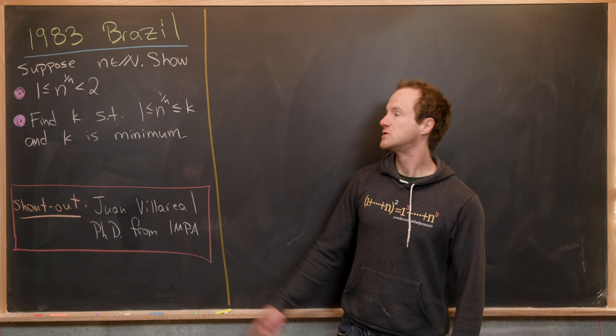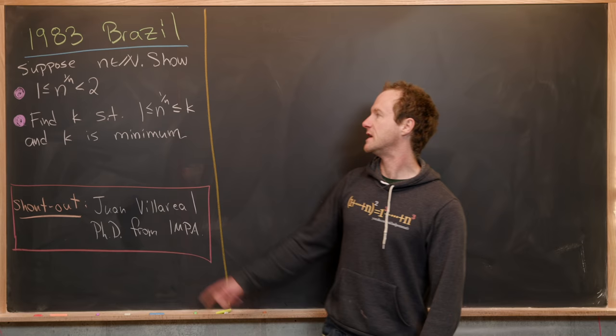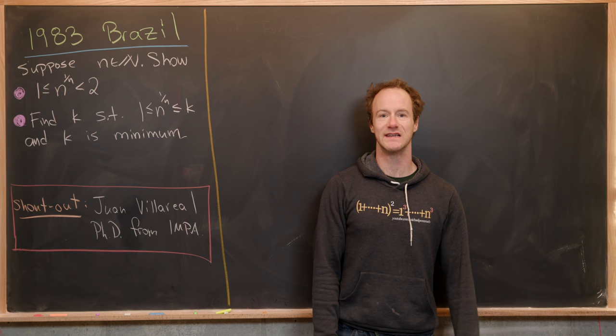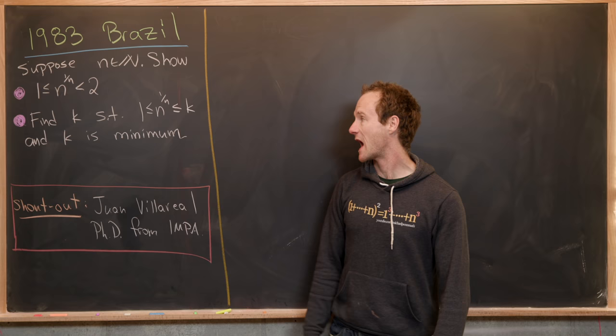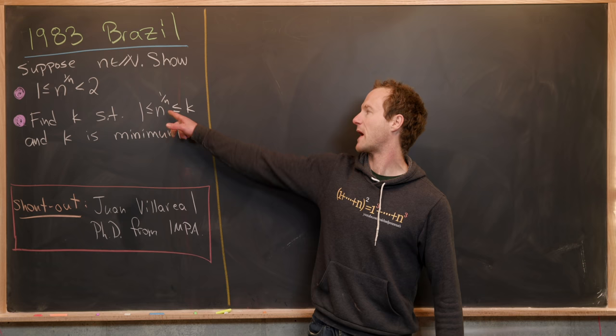What we want to do is suppose that n is a natural number and then show that 1 is less than or equal to n to the 1 over n, which is less than 2. After we do that, we want to find a k which is the minimum upper bound for n to the 1 over n. That's the second part.